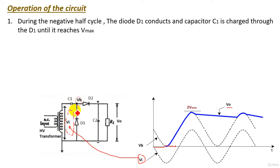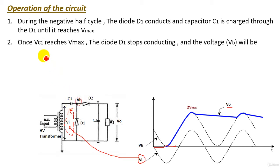Capacitor C1 charges until it reaches V_maximum. Once VC1, the voltage across capacitor C1, reaches V_maximum, at that moment diode D1 will stop conducting and will be open circuit.